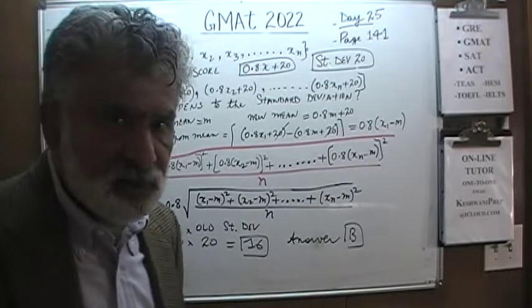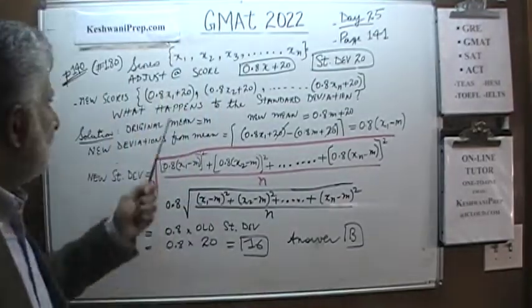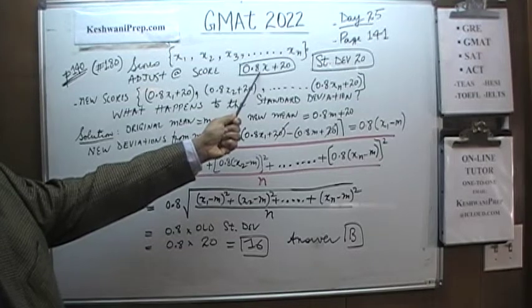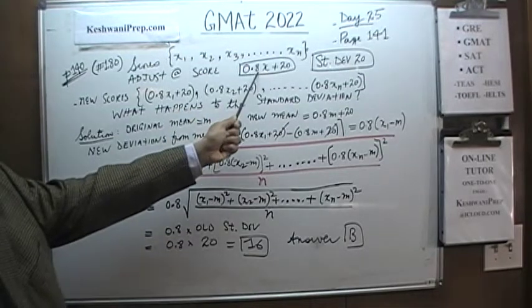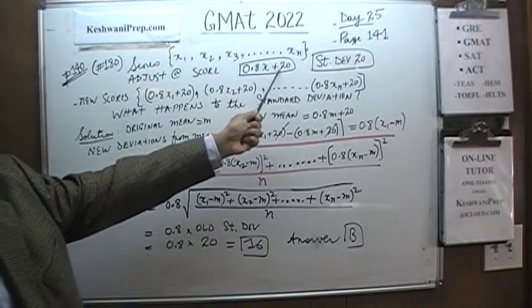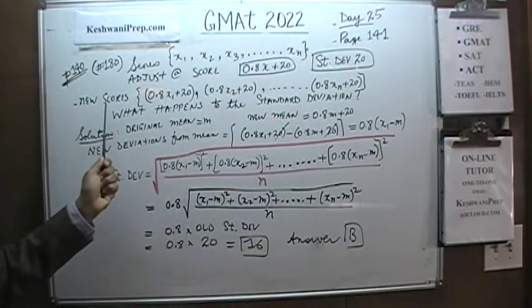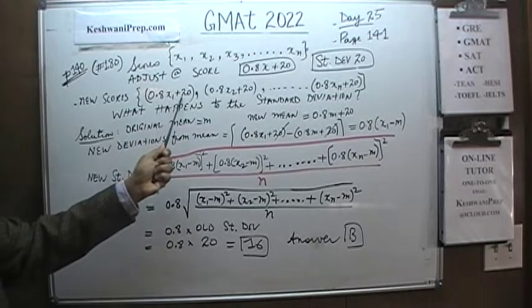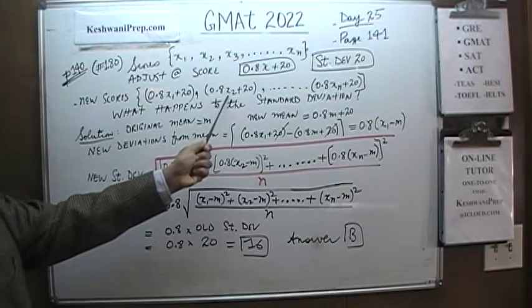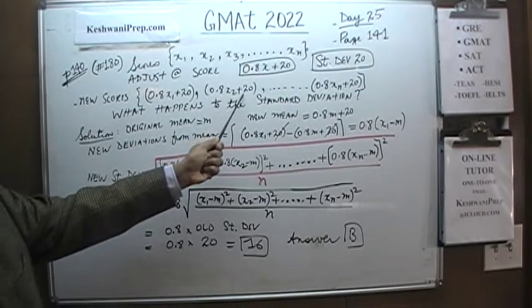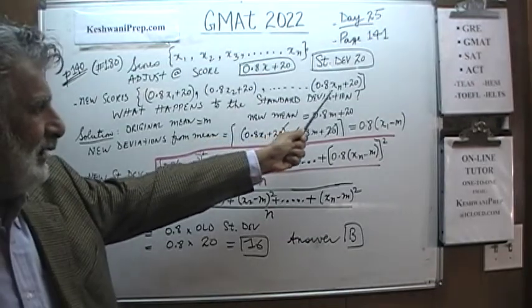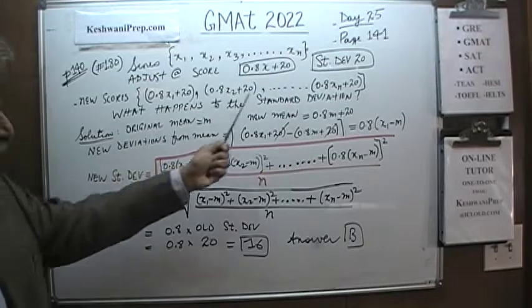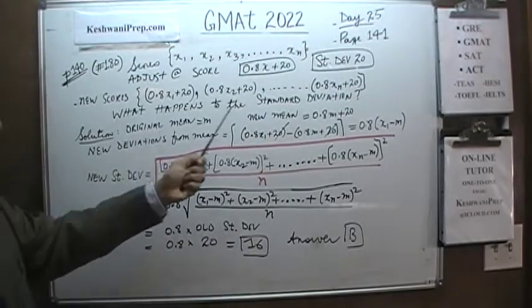What the teacher did was take each score, multiply it by 0.8 — take 80% of each score — and add 20 to it, giving new scores. So the first score x1 becomes 0.8·x1 + 20, the next is 0.8·x2 + 20, and so on until 0.8·xn + 20. The question is: when we do this adjustment, what happens to the standard deviation?